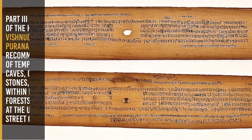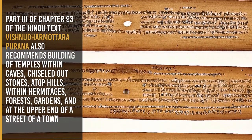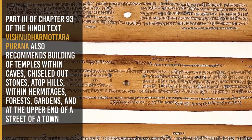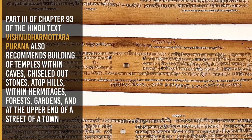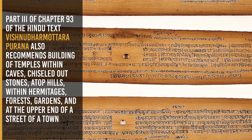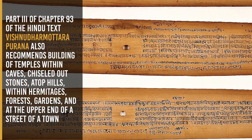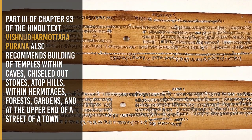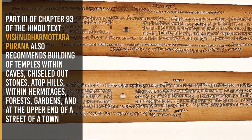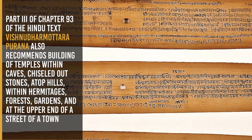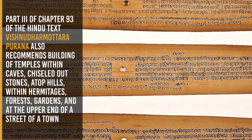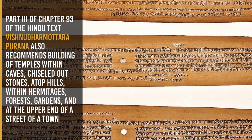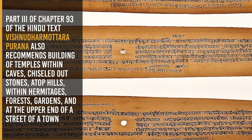Part 3 of chapter 93 of the Hindu text Vishnu-Dharmottara Purana also recommends building temples within caves chiseled out of stones, atop hills, within hermitages, forests, gardens, and at the upper end of a street.